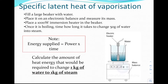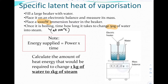Here's what we're going to do: we're going to get a large beaker of water, put it on an electronic balance, and put a 1000-watt heater in the beaker. Once it's boiling, we're going to time how long it takes to change 50 grams of water into steam. When it's boiling it will be at 100 degrees and it's going to stay at 100 degrees — no temperature change. The energy supplied will be the power of the heater, 1000 watts, times the time. We then multiply by 20 to get the energy for one kilogram — that's the specific latent heat of vaporization of water.